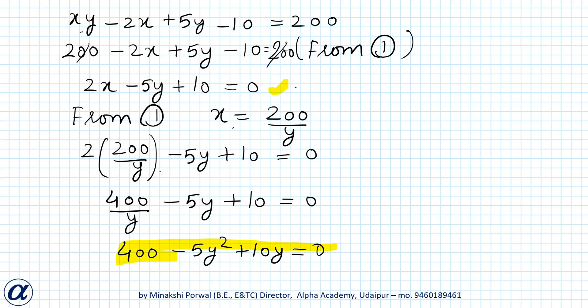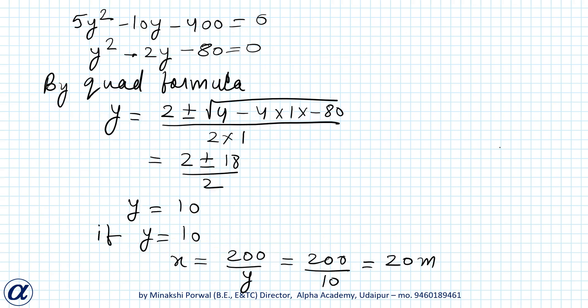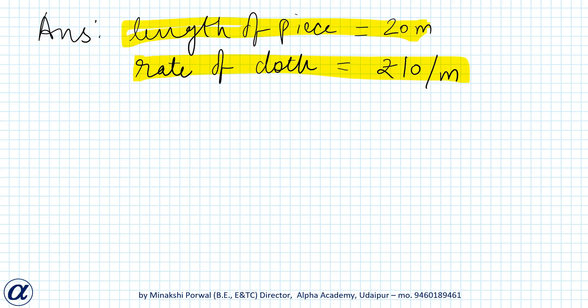Solving the quadratic equation by quadratic formula, x comes to be 20 meters and y comes to be 10. So the final answer is length of piece is 20 meters and rate of cloth is Rs.10 per meter. And we can check the answer that length into rate is equal to Rs.200. This verifies that our answer is correct.